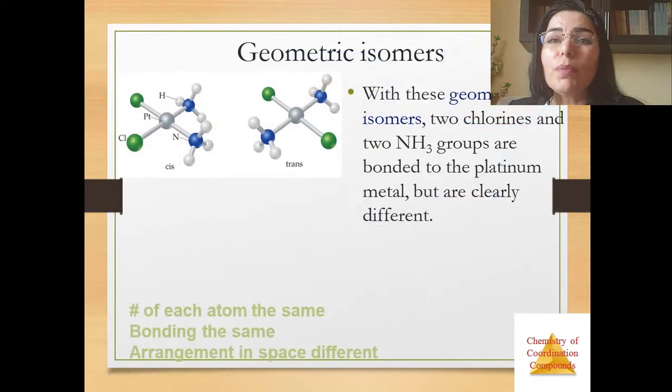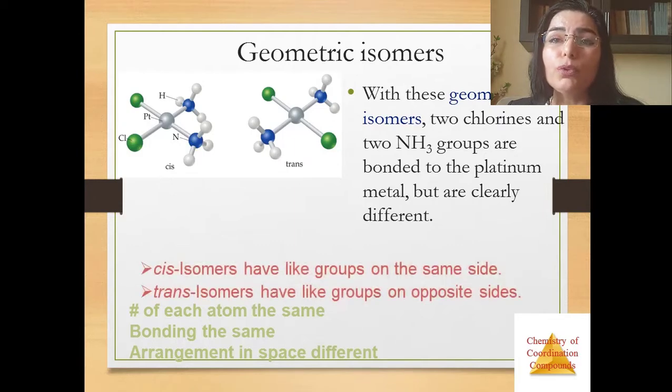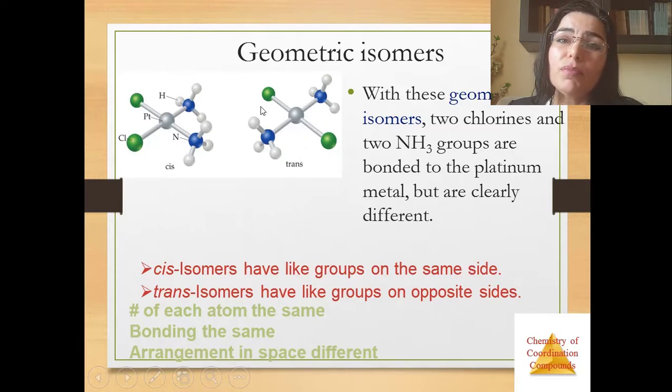With geometric isomers, two chlorines and two ammonia groups are bonded to the platinum metal but are clearly different. Cis isomers have ligand groups on the same side and trans isomers have ligand groups on opposite sides.